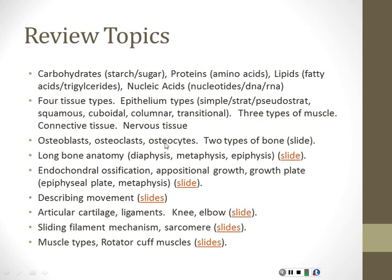Then we talked about bones. The three important cells from bone that you should remember: osteoblasts, osteoclasts, and osteocytes. Osteoblasts are bone makers — they make bone around themselves until they get trapped in the bone they've made, at which point they become an osteocyte. Osteoclasts do just the opposite: they eat bone, they dissolve bone.